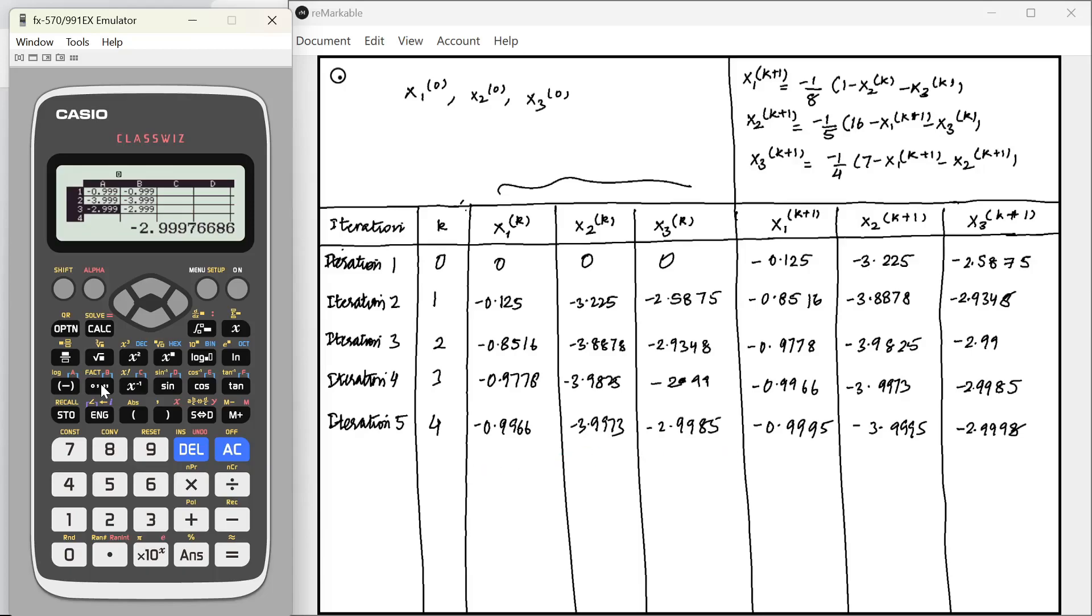I think we can end here. This is going to be our answer after 4th iteration. So finally we can write our answer as x1 4 equals minus 0.9995, x2 4 equals minus 3.9995, x3 4 equals minus 2.9998. This is going to be our final answer. This is how we do the Gauss-Seidel. Thank you.